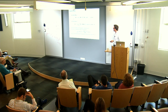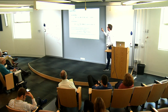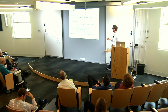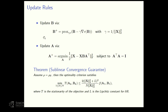The update rules work as follows: we update B using a proximal gradient step, since the gradient of the value function is simple to compute. Then once B is updated, we solve the Procrustes problem to get A. That is the new algorithm we propose. For more theoretical details, I refer to the paper.